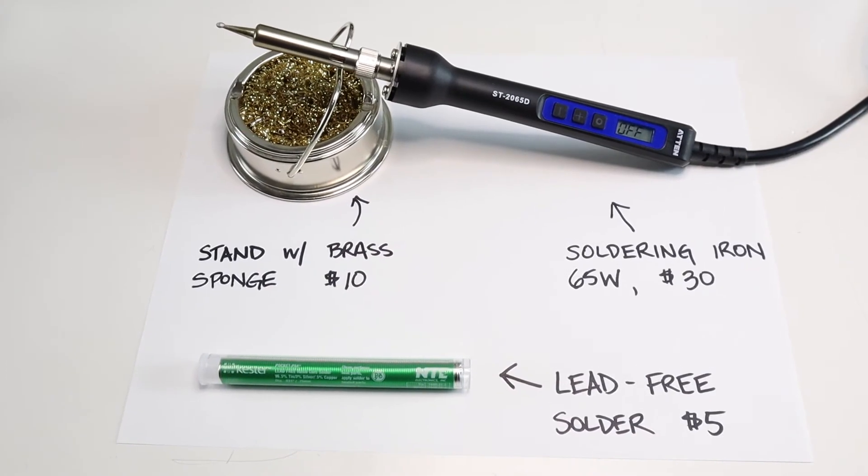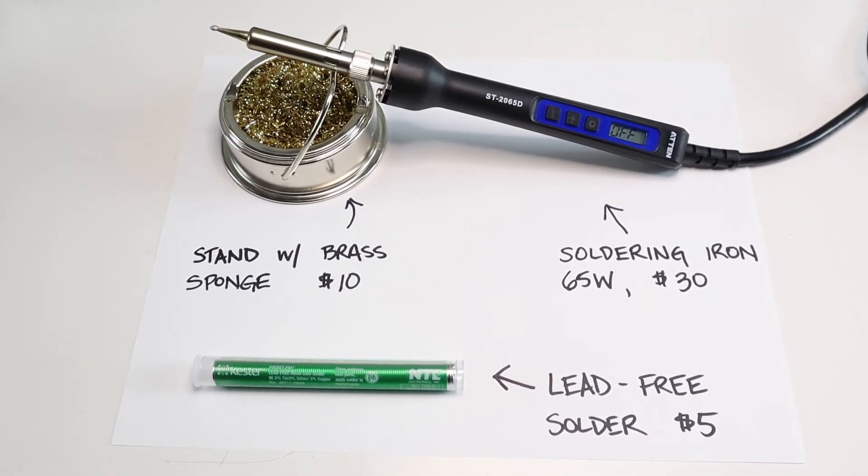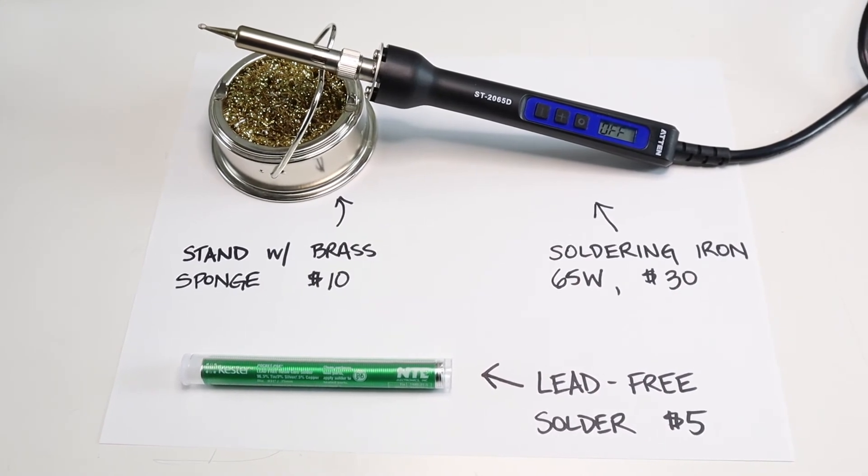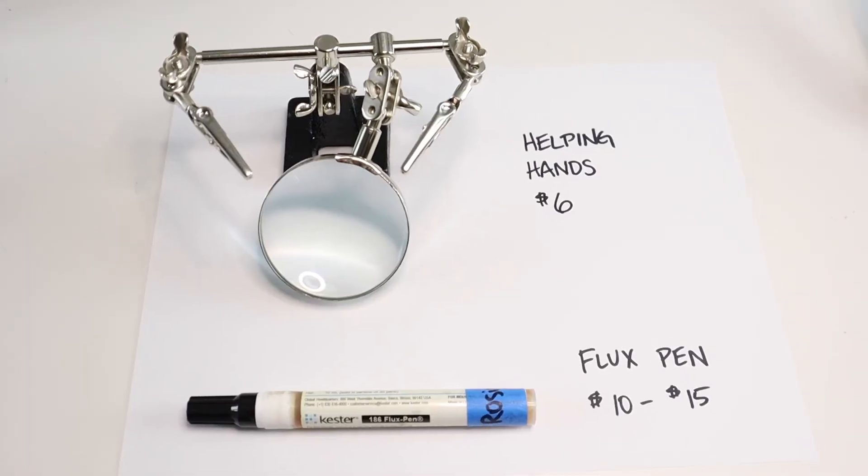Our basic setup, the soldering iron, stand with tip cleaner, and the lead-free solder, cost a total of $45. But there are some tools and materials that make soldering a little easier, like the flux pen and the helping hands. We're making more episodes on the variety of tools and materials you can use, so hit that subscribe button if you'd like to learn more about the different solders, fluxes, and more types of helping hands and magnification. We're also coming out with a video on desoldering and fixing your mistakes.